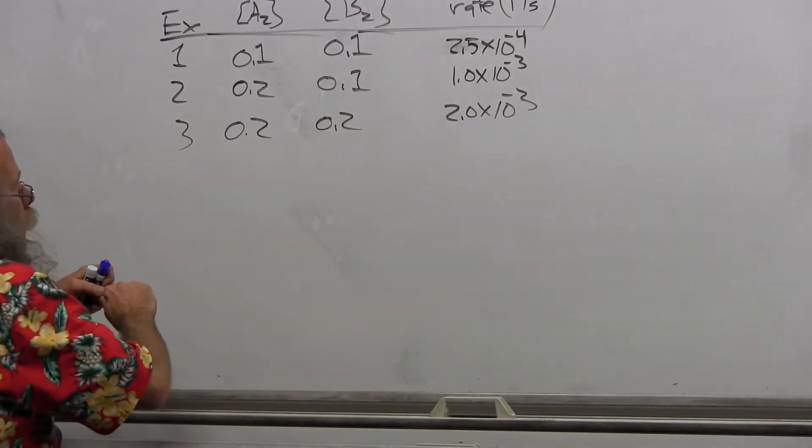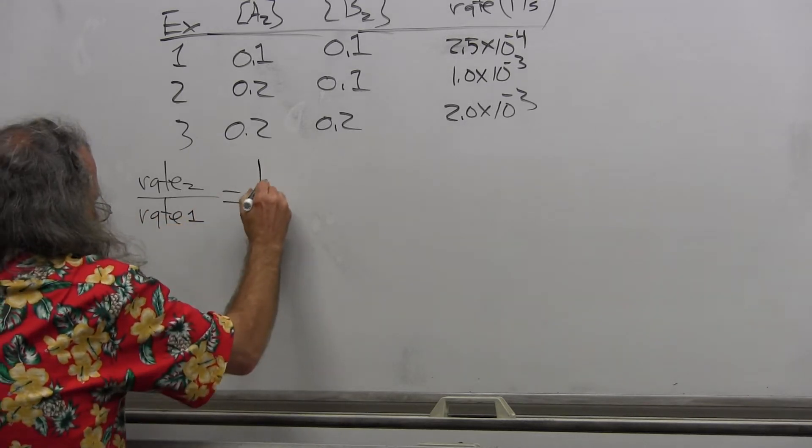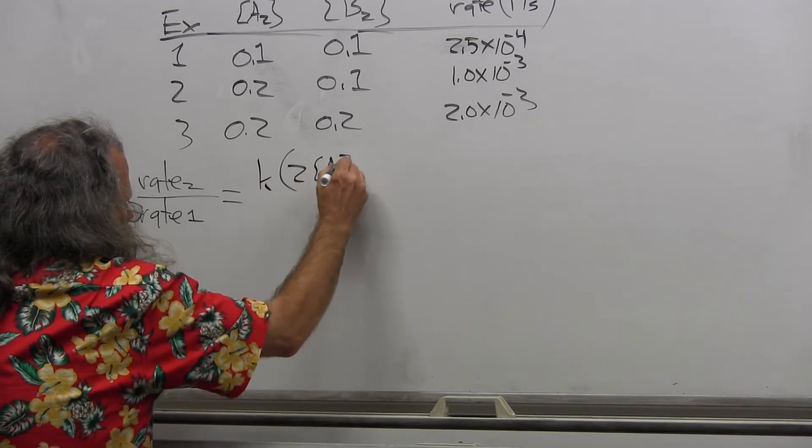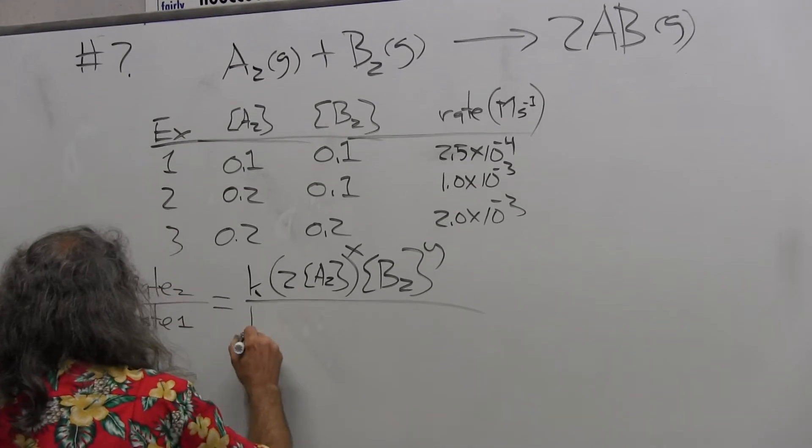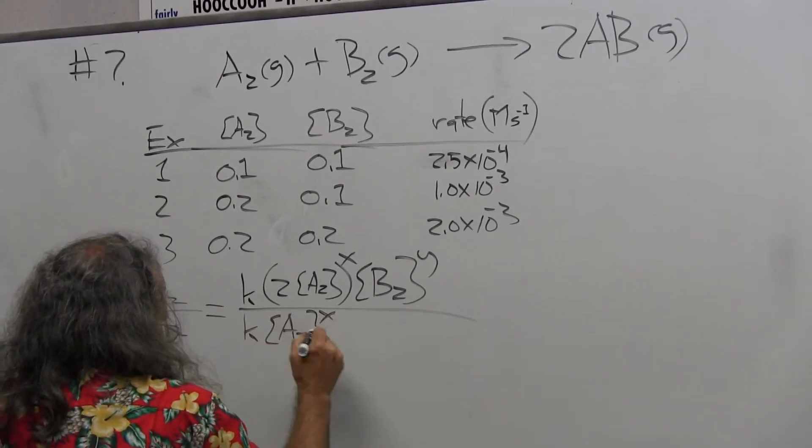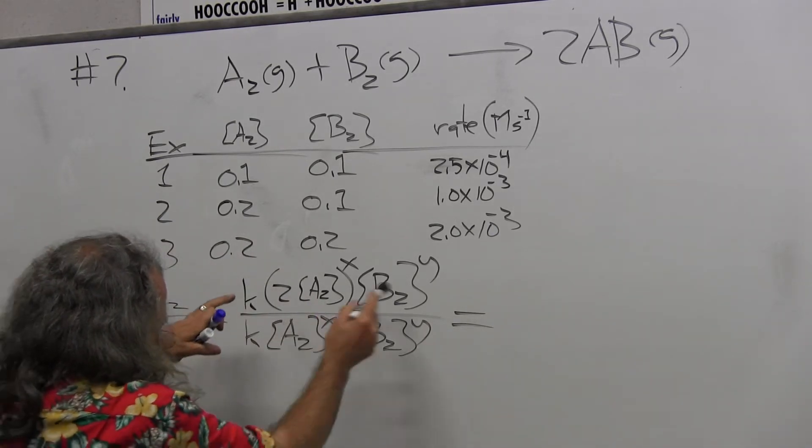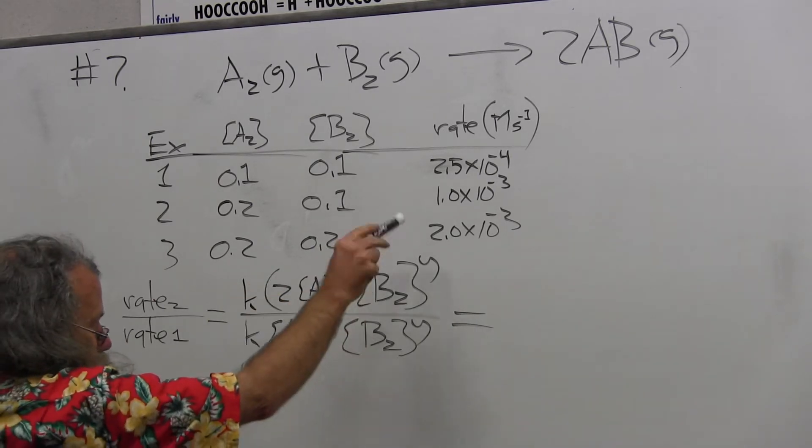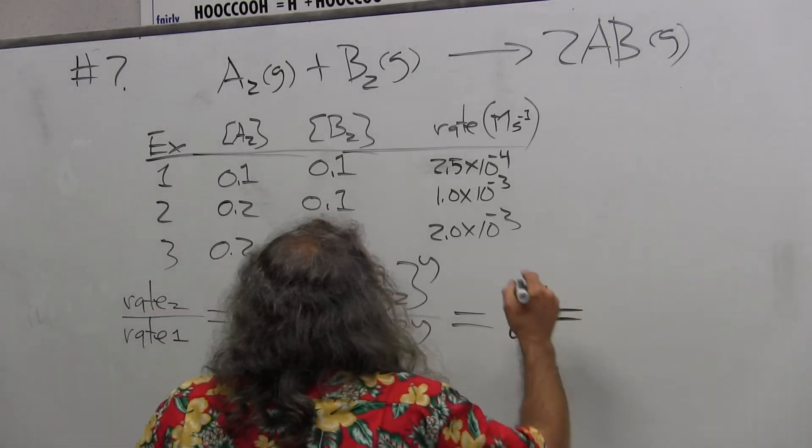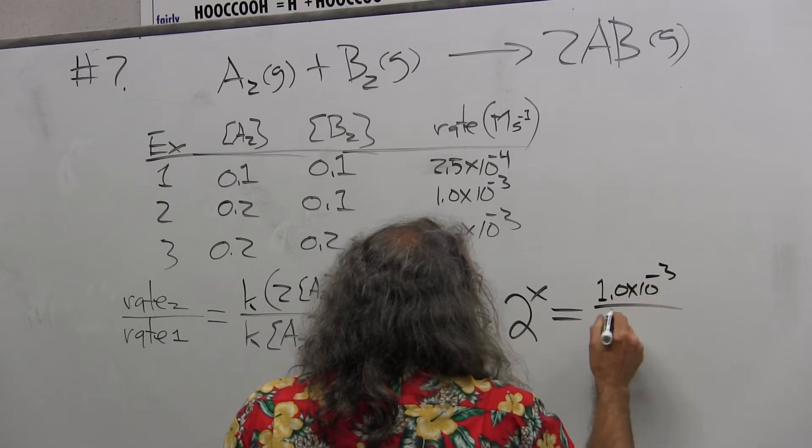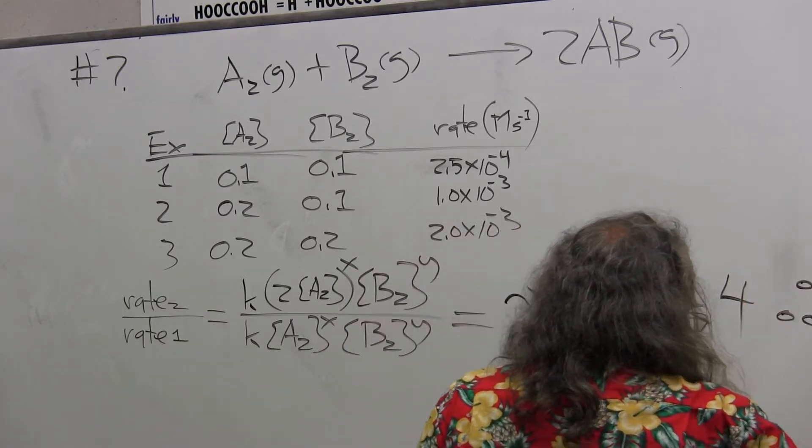What we're going to do is rate 2 over rate 1 is equal to K times [A2] to the X times [B2] to the Y, divided by K times [A2] to the X times [B2] to the Y. Notice that everything here drops out: K divided by K drops out, [B2] to the Y drops out, [A2] to the X drops out, and that's equal to 2 to the X, which equals 1.0 times 10 to the minus 3 divided by 2.5 times 10 to the minus 4, and that's equal to 4. Therefore, X is equal to 2.